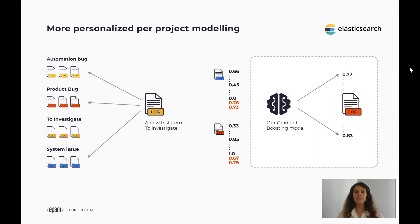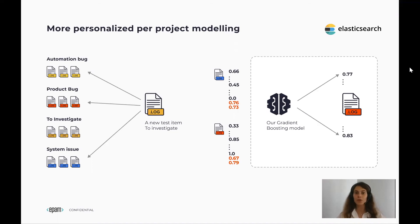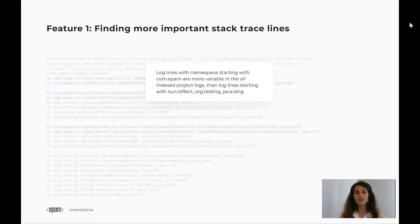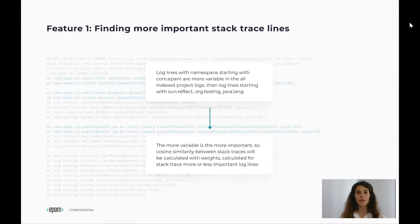We've decided to add even more personalized per-project modeling. The previous personalization came mostly from your data, search algorithms, and your identification of what defect type groups mean for you, but features were calculated by logic shared between projects. Now we are adding features which are calculated and stored per project. The first feature is about finding more important stack trace lines. We noticed that log lines with namespaces from the software being tested — in our case com.ipem — are more variable than those from testing or shared libraries such as org.testing or java.lang. That's why we find more variable namespaces, consider them more important, and store them per project. The feature calculates cosine similarity between stack trace log lines weighted by their importance.